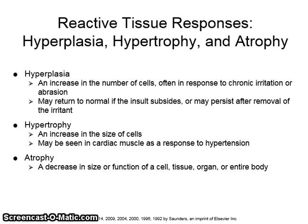Atrophy is a decrease in size or function of a cell, tissue, organ, or the entire body. Atrophied cells are capable of increasing to their normal size after the stress is removed. Atrophy can be present in the muscular wasting that occurs in some chronic diseases that do not allow mobility and thus function of the body — it's a use it or lose it type of response.